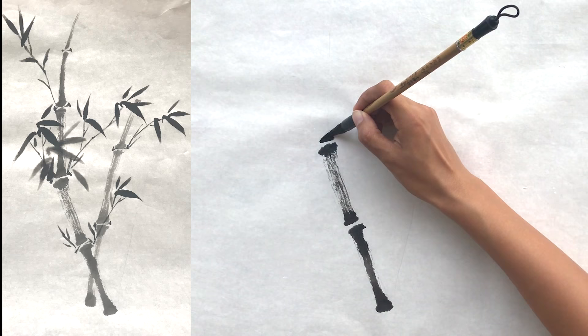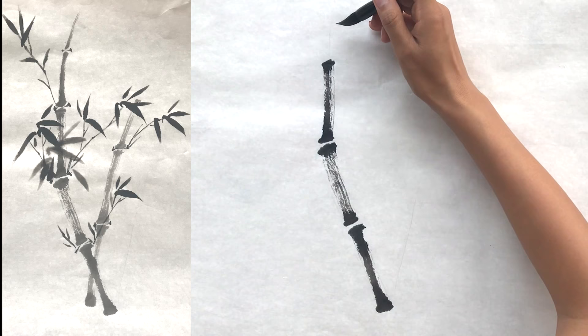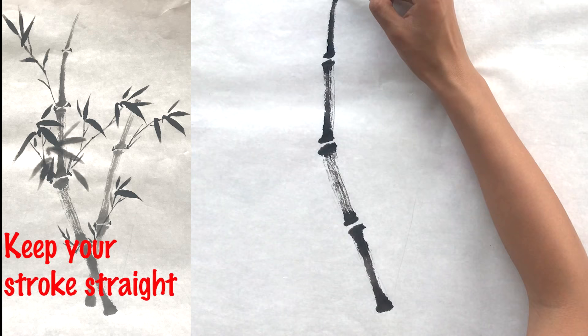When you want to paint a slanted pole, first make a section in one direction. Then paint a section in a new slanted direction. Keep all of your strokes straight.